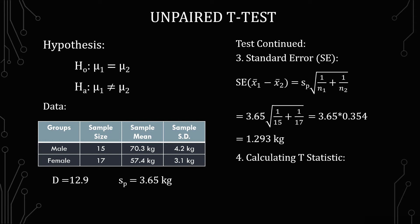Getting towards the end here we're calculating the t statistic. So we have t equals the sample mean of the first group minus the sample mean of the second group over the standard error. And this gives us 12.9 over 1.293 which gives us 9.977 for our t statistic.